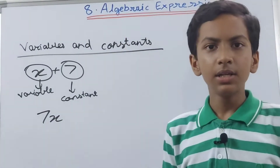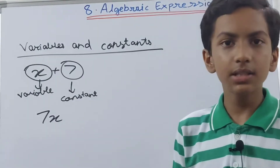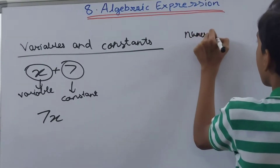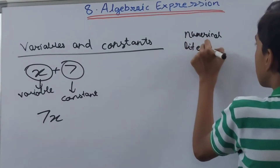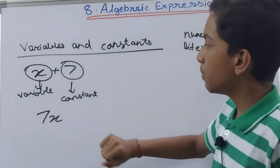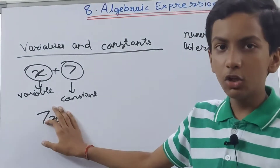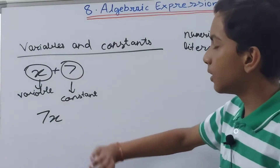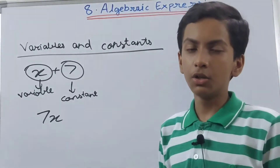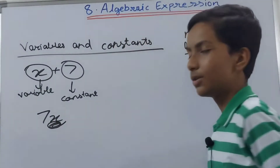In the expression 7x, x is our variable. Now we will see something new: coefficients — specifically numerical coefficients and literal coefficients. For the expression 7x, the numerical coefficient is 7. To find it, we hide the variable and the number that remains is the numerical coefficient. Literal means variable, so the literal coefficient here is x.